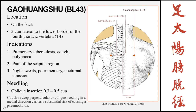The next point is Gaohuang Shu, Bladder 43, located on the back three cun lateral to the lower border of the fourth thoracic vertebra. Count down to T4 and go three cun lateral; it's on the medial border of the scapula. Indications include local pain of the scapula region, pulmonary tuberculosis, cough, polypnea, night sweats, poor memory, and nocturnal emissions. Needling is oblique insertion 0.3 to 0.5 cun with the same caution against deep perpendicular or medially oblique needling.